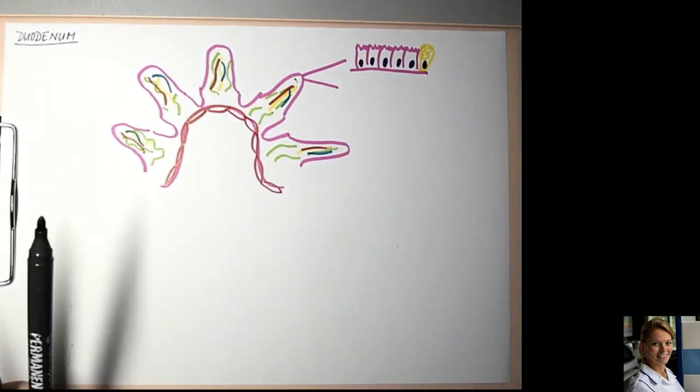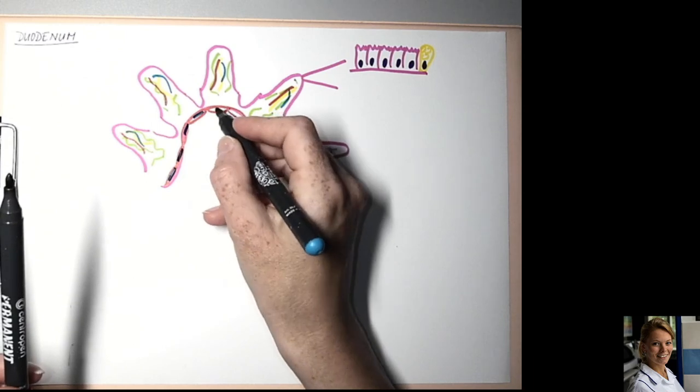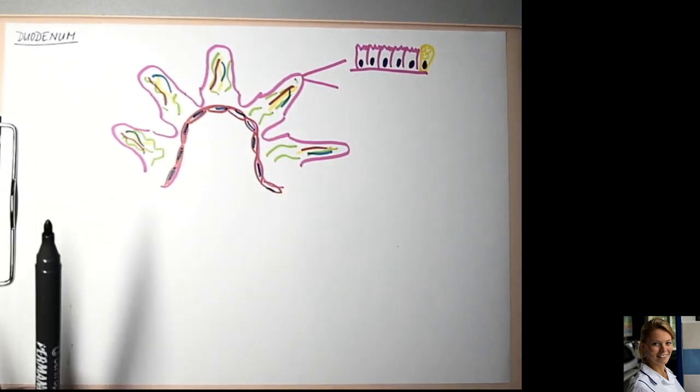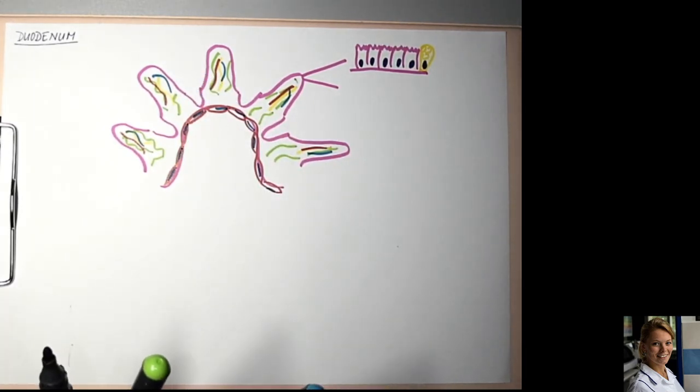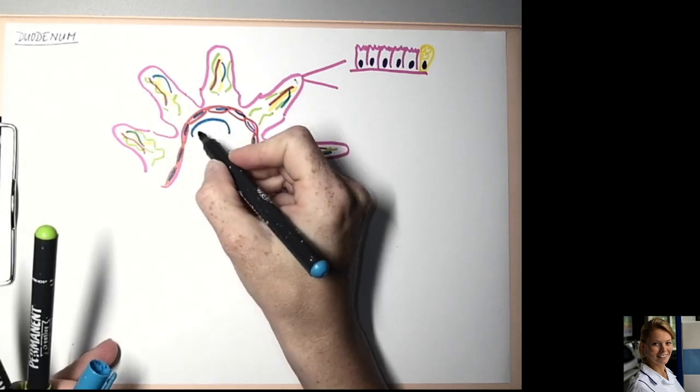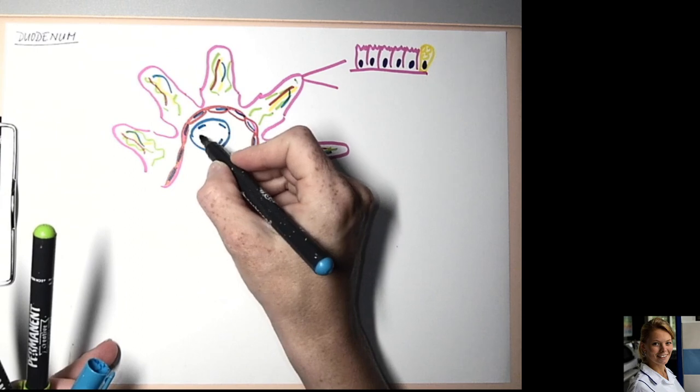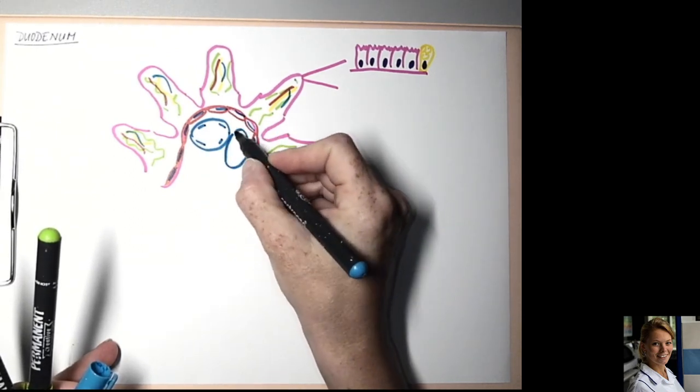These are smooth muscle cells with elongated nuclei. Beneath the mucosa is submucosa, which is full of mucosal glands, Brunner's glands. Mucosal cells have basal located nuclei and very light cytoplasm.